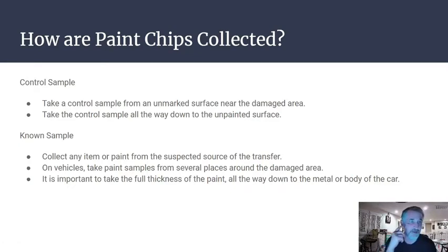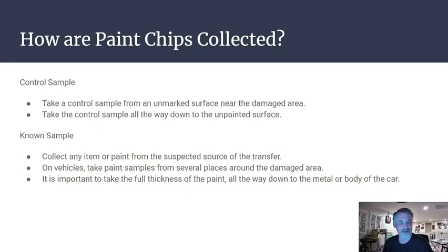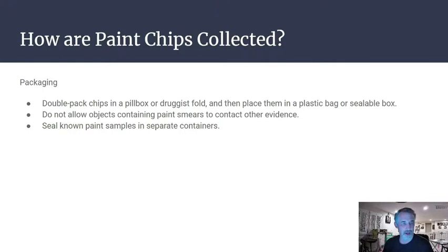For control samples of paint chips, take a sample from an unmarked surface near the damaged area, cutting all the way down to the raw unpainted surface — whether wood or plaster. Known samples are collected from the suspect or source of transfer; for vehicles, take samples from several places around the damaged area, going all the way down to the metal. When packaging, double package paint chips in a pill box or druggist fold, then place in a plastic bag or sealable box. Don't allow objects with paint smears to contact other evidence, and seal known paint samples in separate containers.